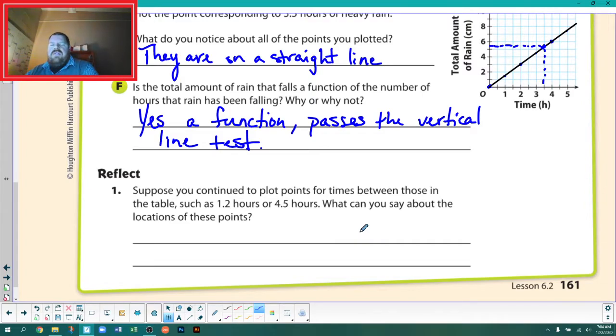Suppose you continue to plot points for times between those in the table, such as 1.2 or 4.5. What can you say about the locations of these points? 1.2 would be somewhere almost halfway between these two lines, might be close to two centimeters. But generally, thinking about any points in the middle here, the one thing we're guaranteed is that they're going to be on this line.